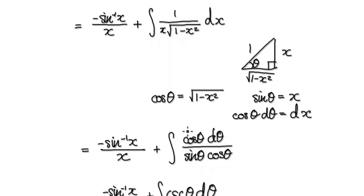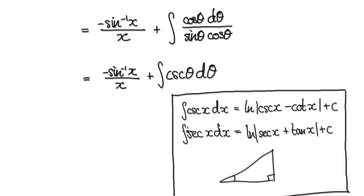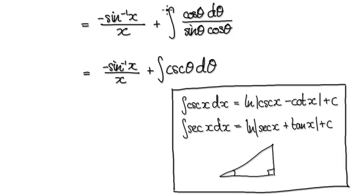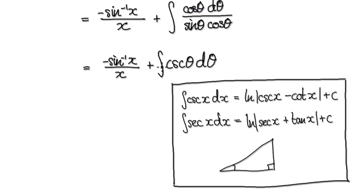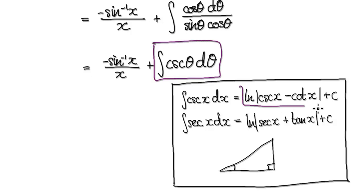So now it's just a matter of tidying this up. Tidying this up, that will then become 1 over sin theta, and that is really cosecant of theta. We know how to integrate this — when you integrate this, it gives you this thing here.